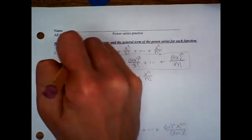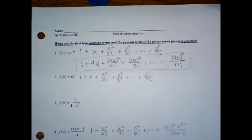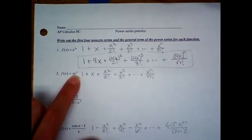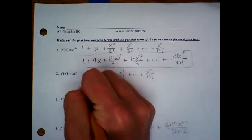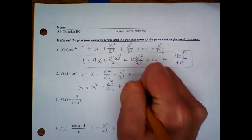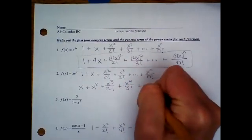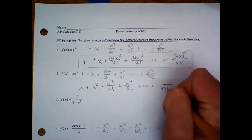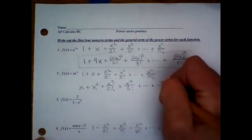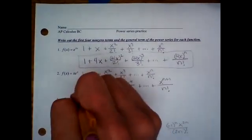E to the X is one of the easier ones. For this next one, we're going to multiply every term by X — you're literally just distributing an X through the series for e^x. That gives us X plus X squared plus X cubed over two factorial, plus X to the fourth over three factorial. For the general term, it's still over N factorial in the denominator, and you just add one to the exponent in the numerator because you multiplied an X through.